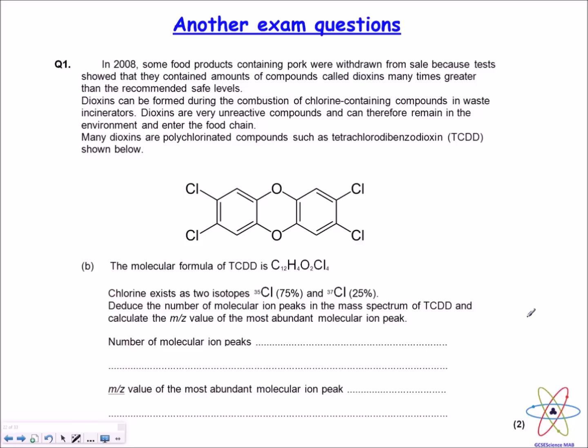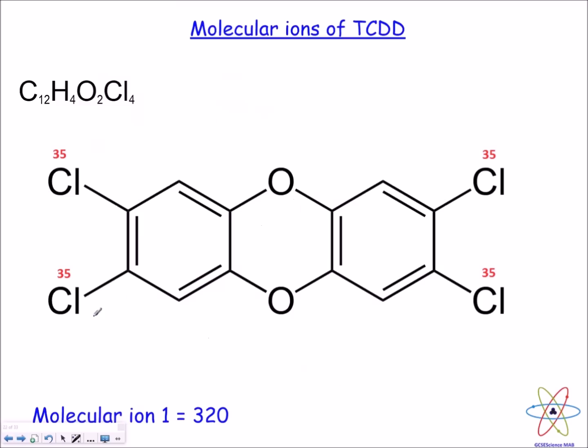The first part of the question is asking you to figure out the number of molecular ion peaks, bearing in mind that chlorine has two isotopes. One of the isotopes is chlorine-35 and has a relative abundance of 75%. The other isotope is chlorine-37 and that has a relative abundance of 25%. Let's just start off with all of these chlorine atoms in this molecule being chlorine-35. If you use the molecular formula, you can work out the relative formula mass of this whole compound and that will be your first molecular ion.